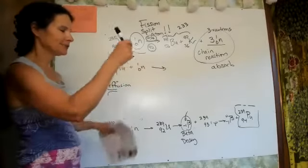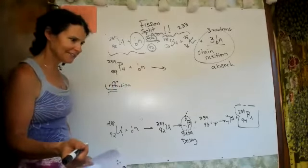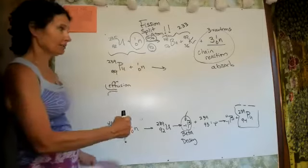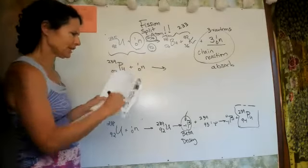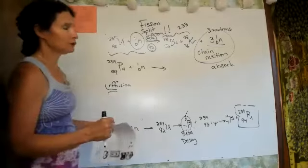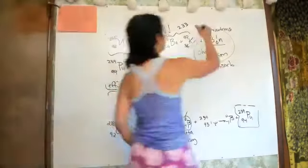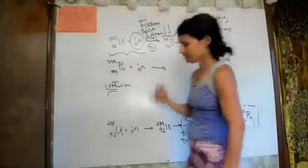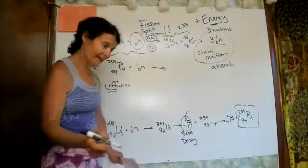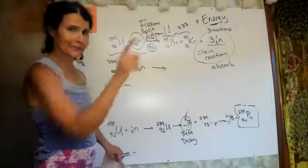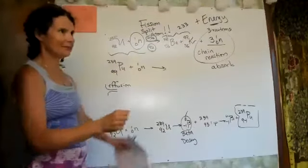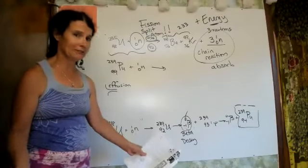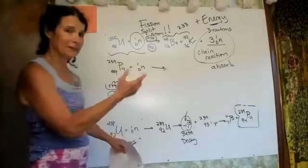Boron and graphite rods are placed in nuclear reactors to absorb the neutrons, keeping the reaction controlled. The energy output is beyond our dreams — Eisenhower cut the ribbon for the first nuclear power plant in Idaho, saying within a decade all energy would be free for all people on the planet because we found the ultimate source of energy.